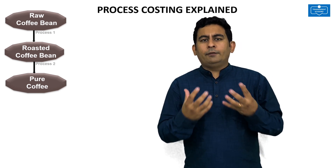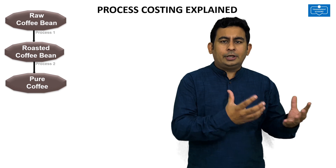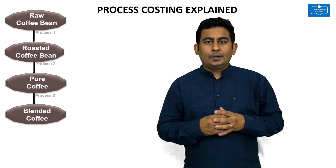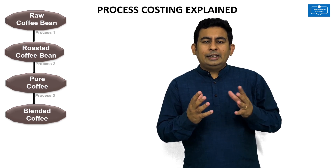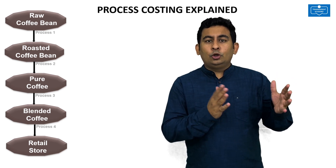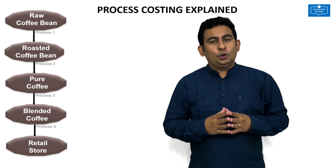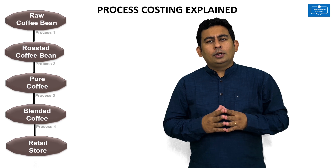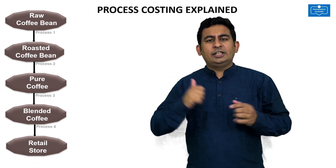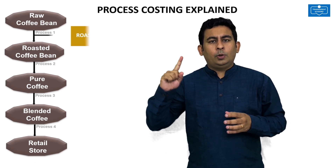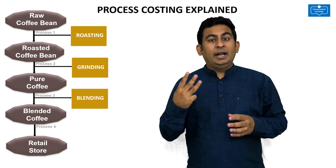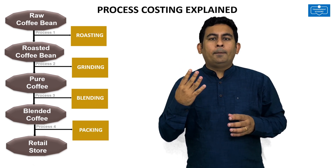The pure coffee powder is then taken to process 3 where it is mixed with chicory to make blended coffee. This blended coffee is then taken to process 4 where it is packed and is ready to be supplied to the retail stores. So the coffee that we drink daily undergoes 4 processes before it reaches our home: process 1 roasting, process 2 grinding, process 3 blending, and process 4 packing.